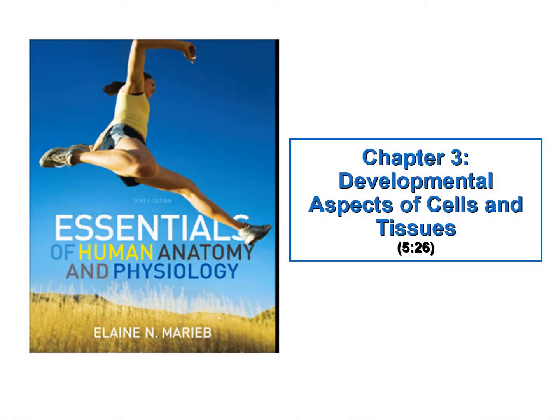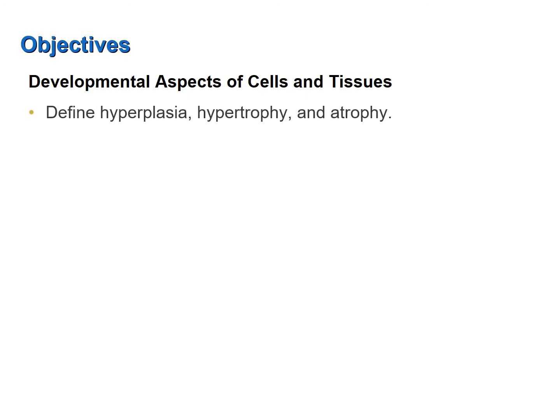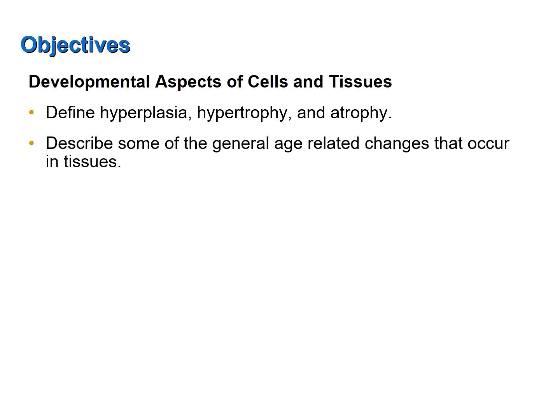The final topic from Chapter 3 is the developmental aspects of cells and tissues. This screencast was designed to help you achieve the following objectives: define hyperplasia, hypertrophy, and atrophy, and describe some of the general age-related changes that occur in tissues.